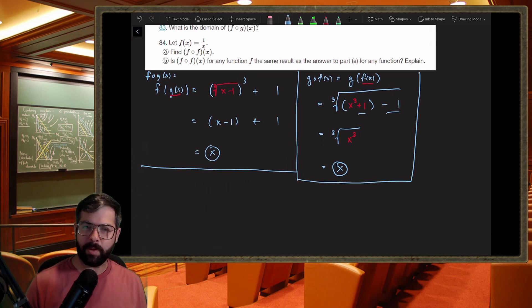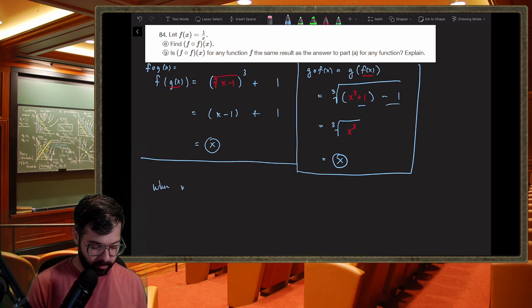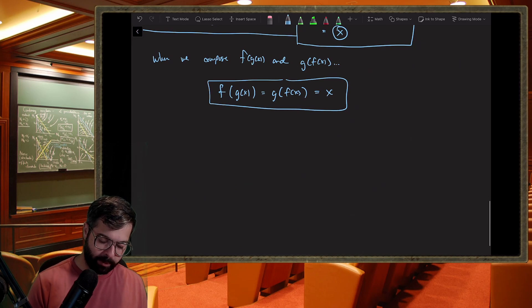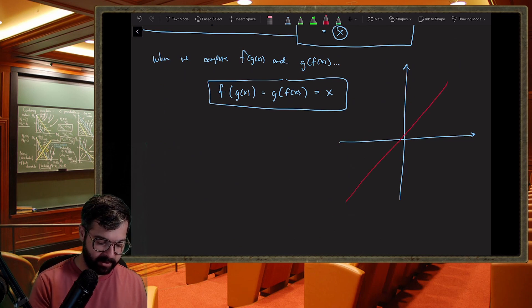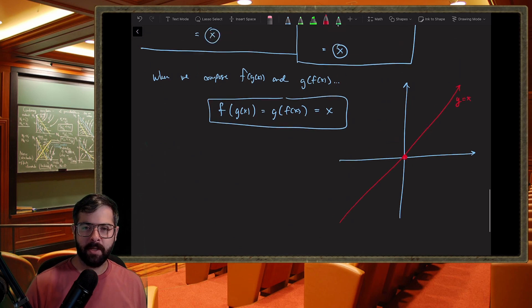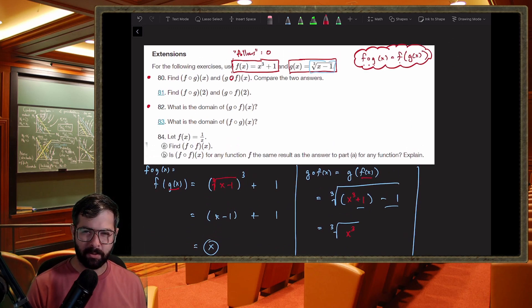So the question here is what do we notice? When we compose these two functions together, we see we get the same output. F of g of x equals g of f of x, and this equals just the simple function x, y equals x, which if you remember, is a straight line through the origin at like 45 degrees. It bisects the first and third quadrants like that.